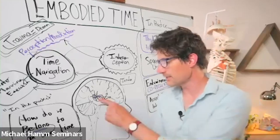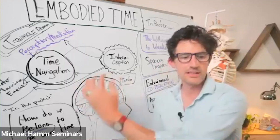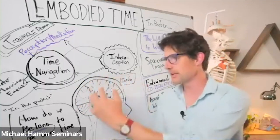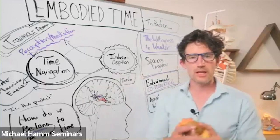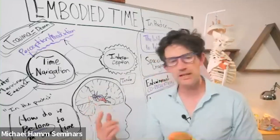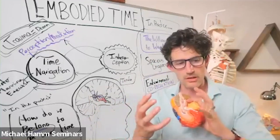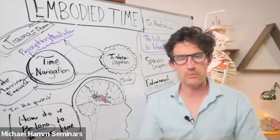But it's not instantaneous. That flow is happening in kind of a series of moments, and this, at least according to Bud Craig, is what accounts for the stretchiness of subjective time.